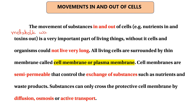The metabolism of metabolic waste is a very important box of living things — without it, each cell and organism could not live very long. All living cells are surrounded by a thin membrane called the cell membrane or plasma membrane. Cell membranes are semi-permeable and control the passage of substances such as nutrients and oxygen.